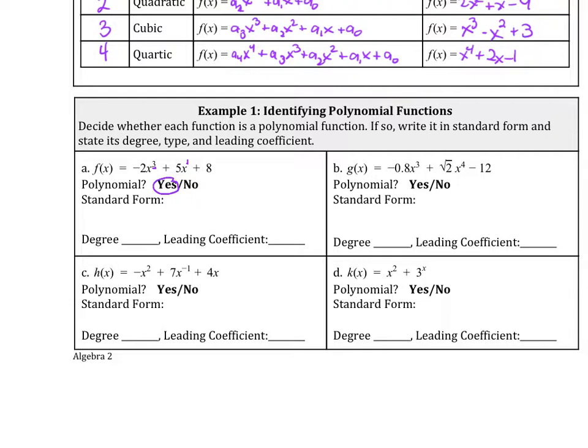The degree is just the highest exponent here. So our degree is 3. The leading coefficient is just the number in front of that degree, the high degree. So this answer, leading coefficient, is the negative 2.